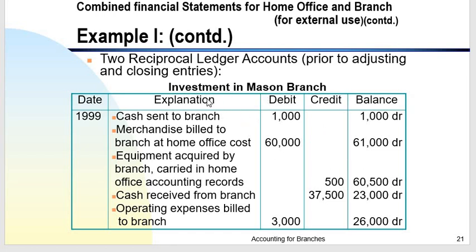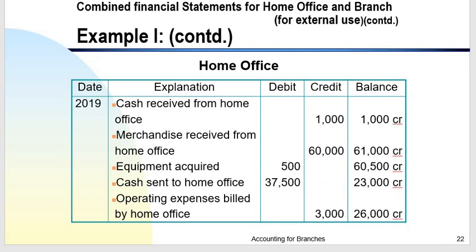Here are the intercompany transactions between the home office and the branch. Note the account of Investment in Branch in the home office books — it has a $26,000 debit balance. If you look at the Home Office account in the branch books, it has a $26,000 credit balance. This verifies that the two reciprocal accounts are equal, as required before preparing the combined financial statements.